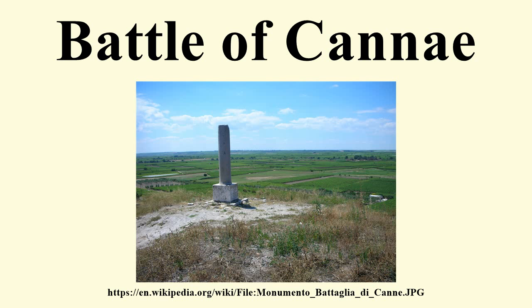It is regarded both as one of the greatest tactical feats in military history and as one of the worst defeats in Roman history. Having recovered from their losses at Trebia and Lake Trasimene, the Romans decided to engage Hannibal at Cannae with roughly 86,000 Roman and allied troops. The Romans massed their heavy infantry in a deeper formation than usual, while Hannibal utilized the double envelopment tactic. This was so successful that the Roman army was effectively destroyed as a fighting force. Following the defeat, Capua and several other Italian city-states defected from the Roman Republic to Carthage.